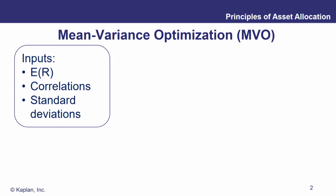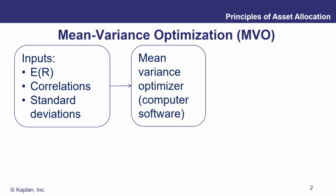We start with the inputs that we need: expected returns, standard deviation, and correlations. Then we feed that into our supercomputer — it might just be Solver in Excel or something more sophisticated — some sort of computer software so that we can generate this mean variance optimization.